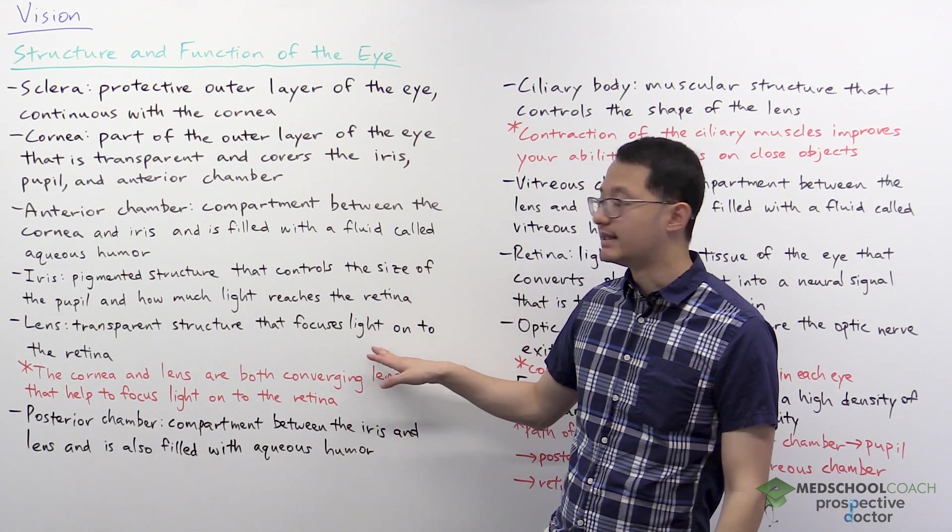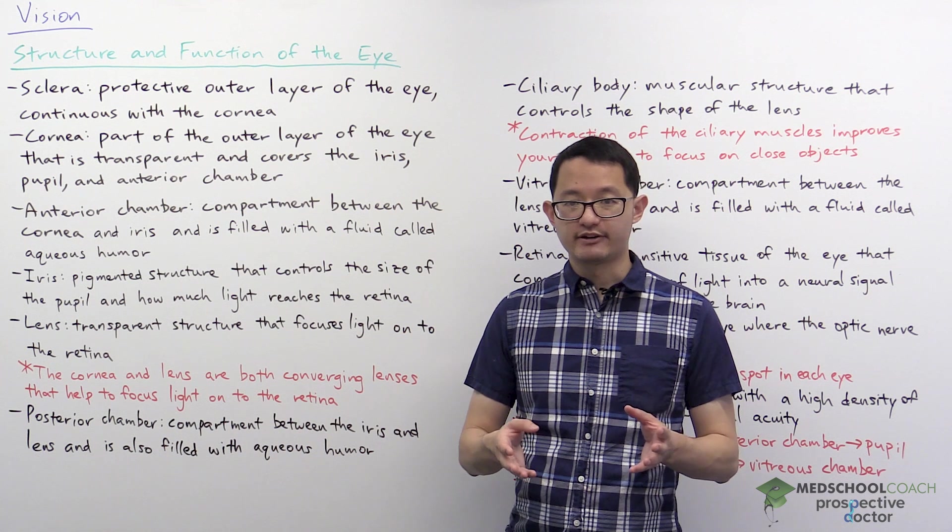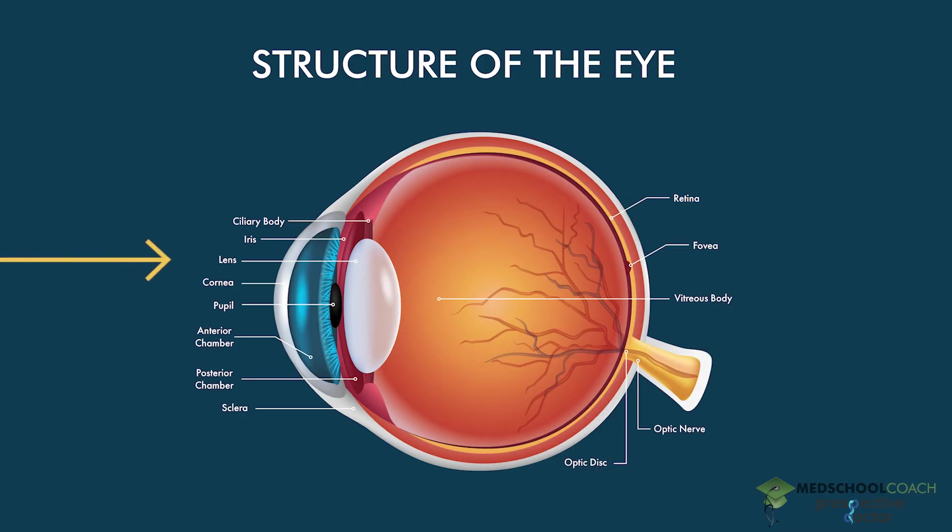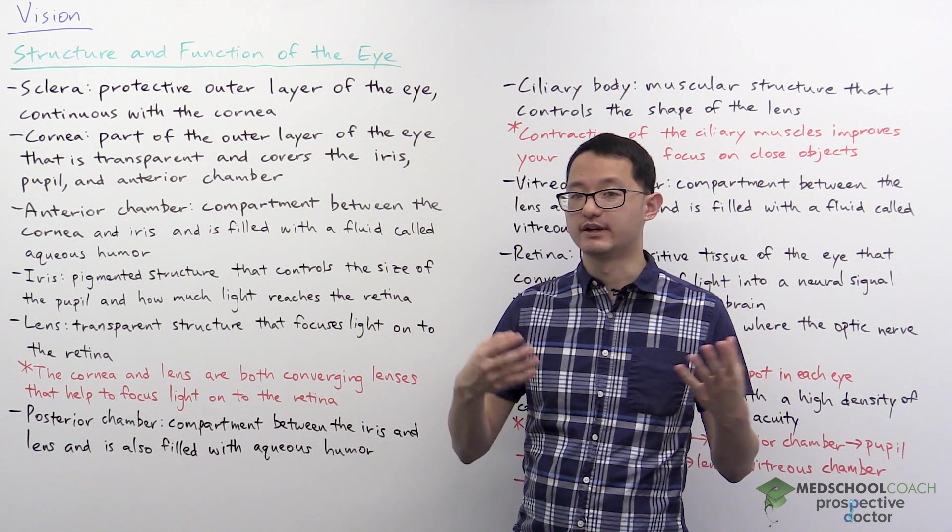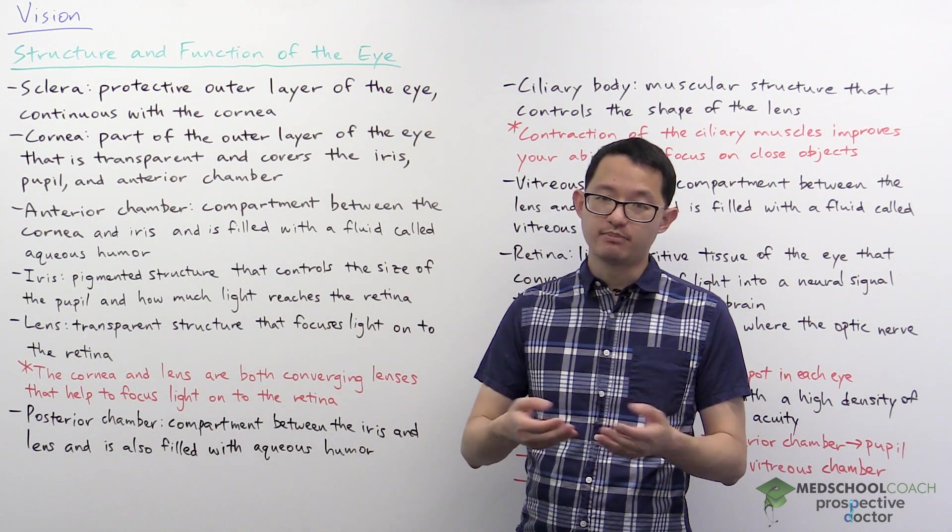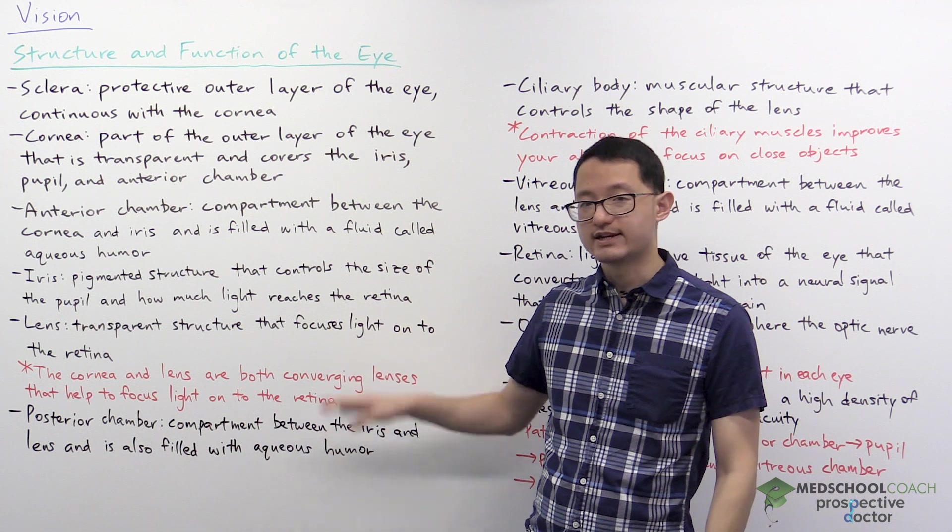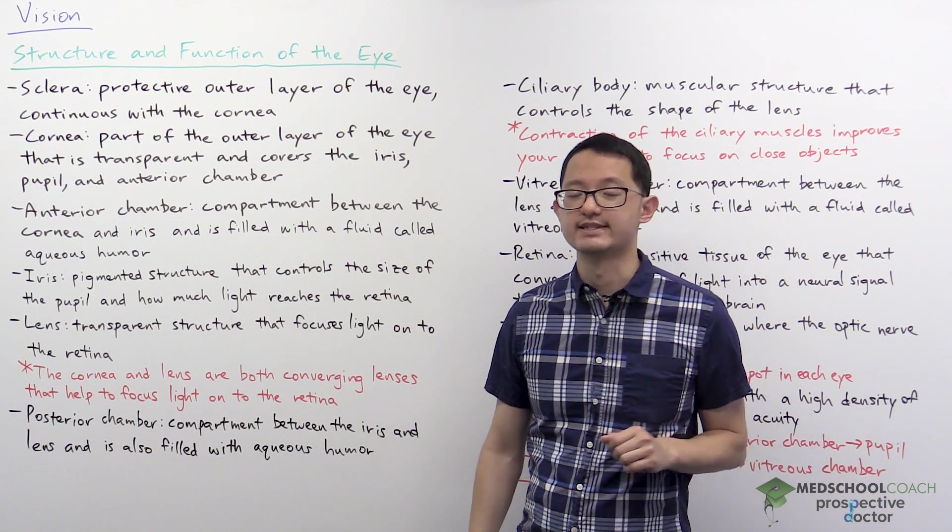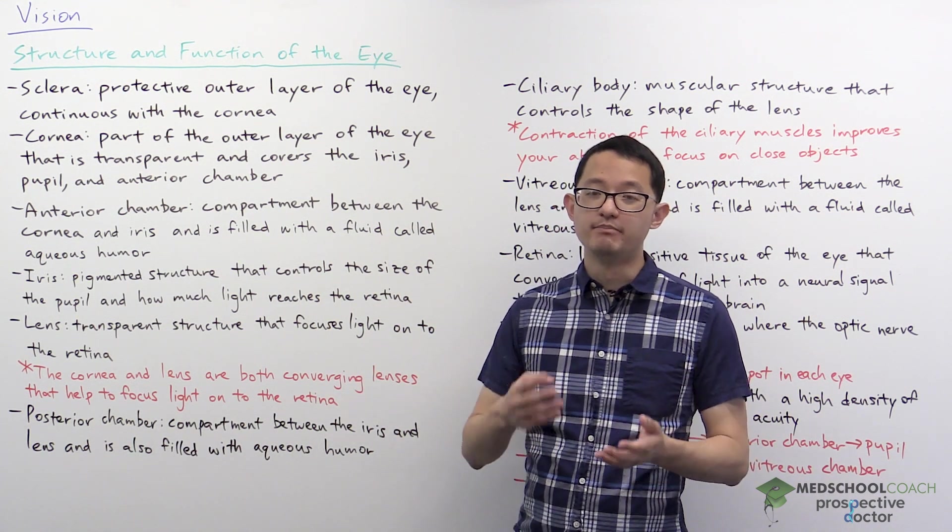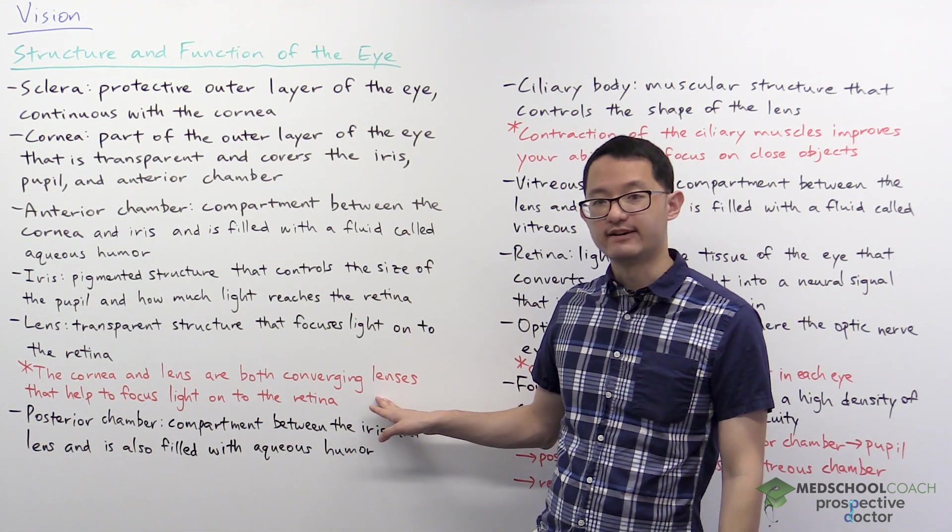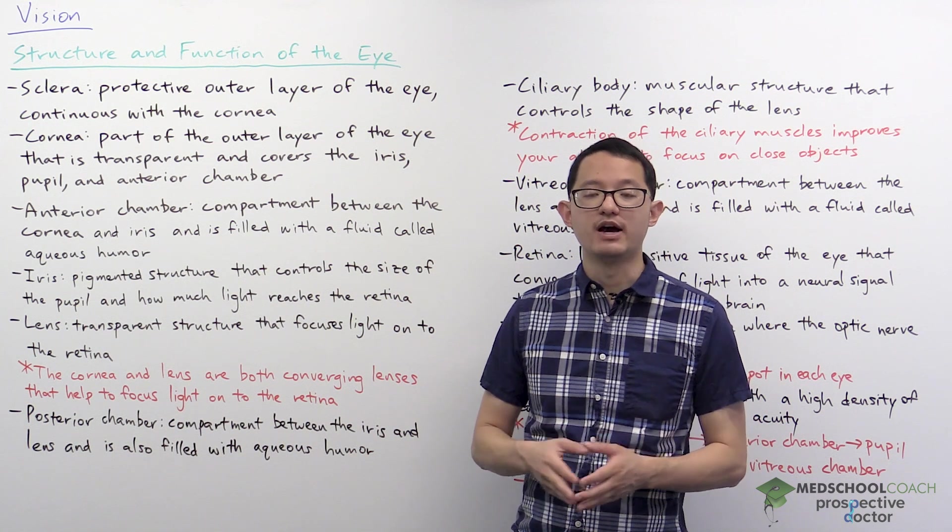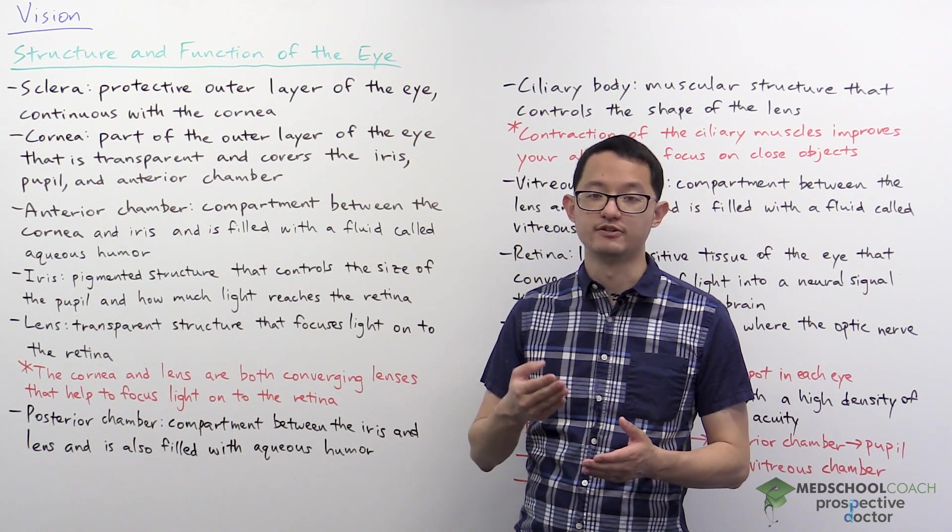The light will then reach the lens. As you can see in the diagram, the lens is a transparent structure, and it has an important role in focusing light onto the retina. When you think about the term lens, you might recall some of the concepts you've learned in physics. It's actually important for you to know that our eyes actually have two physics lenses. As it turns out, both the cornea and the lens are converging lenses, and converging lenses are able to help focus light onto our retina.